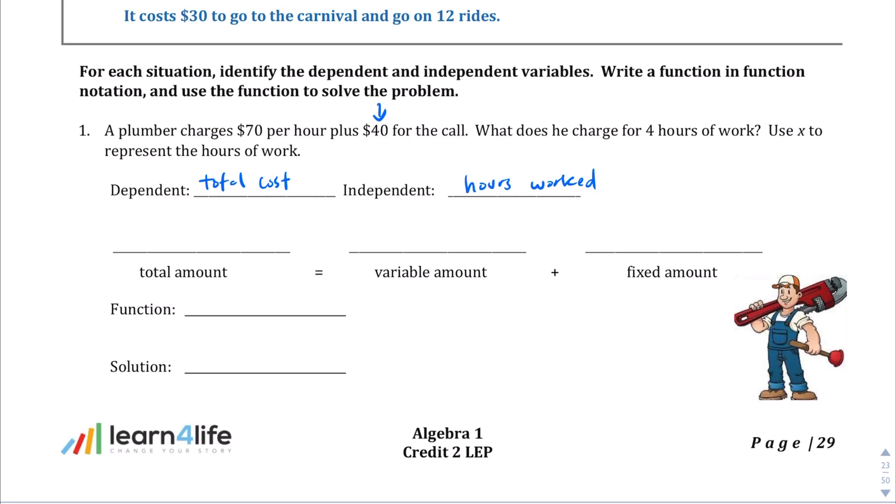Anyway, the dependent variable here is the total cost of the job based on how many hours worked. If he takes his sweet time and takes longer, he actually makes more money. But anyway, the total amount that we are going to write here, let's just call this f(x), that's the total amount. The variable amount that will change based on amount of hours worked is $70 per hour times x. The fixed amount, just for him showing up, he gets $40.